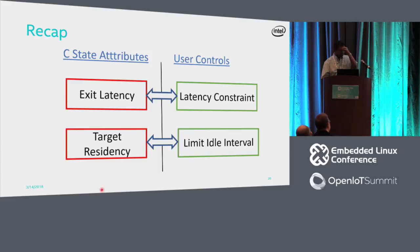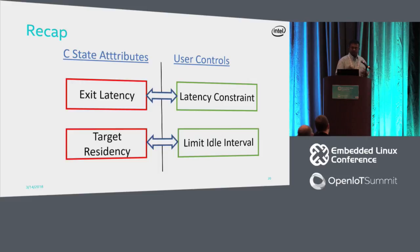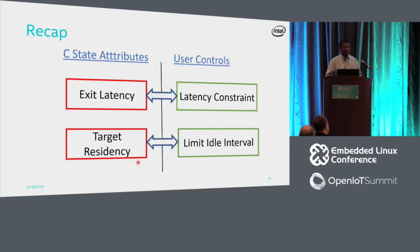Let's recap. We know that deep C-states cause high latency jitter, and during critical phases we want to filter them out. We filter them out using C-state attributes and corresponding user controls. For exit latency, we give a latency constraint. For target residency, we limit the idle interval our application sleeps at one time.